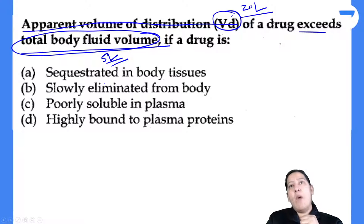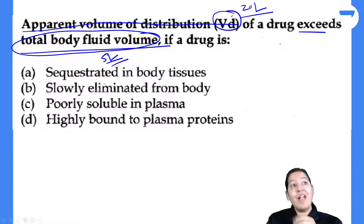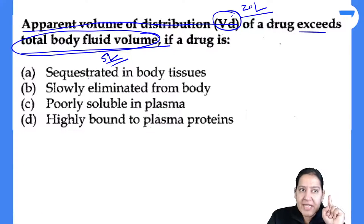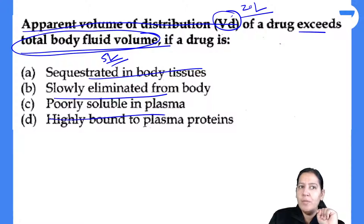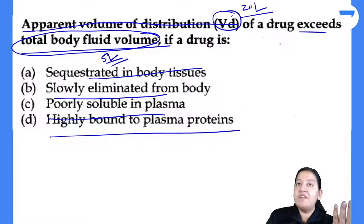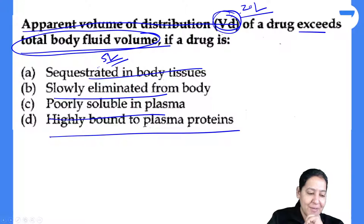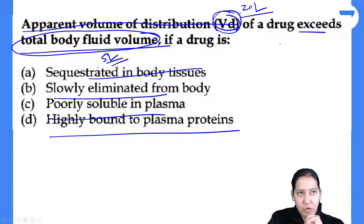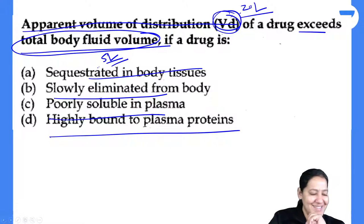These are ultra high difficulty level questions. If you have thorough knowledge you can apply it. Otherwise rattafication (rote memorization) will not work here. Apply the formula. The examiner is asking for more volume of distribution — so bound form is less, free form is more. Free is in tissue, bound is in blood. Apply this in options. Correct answer is A, not D.